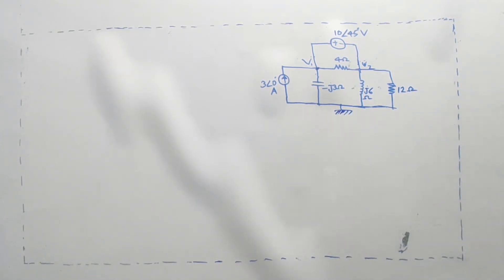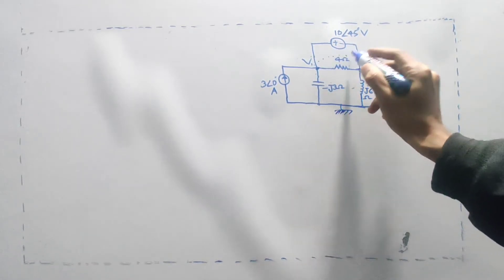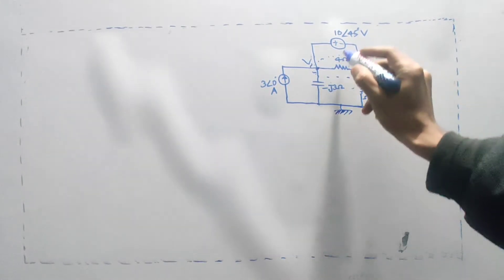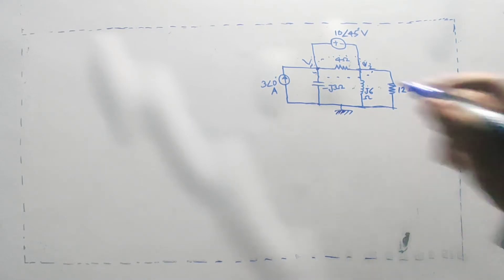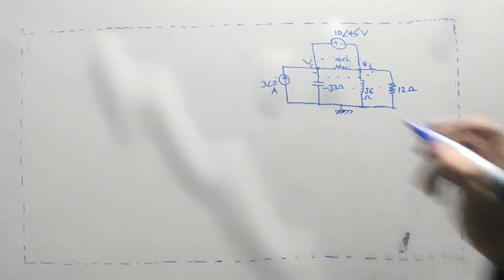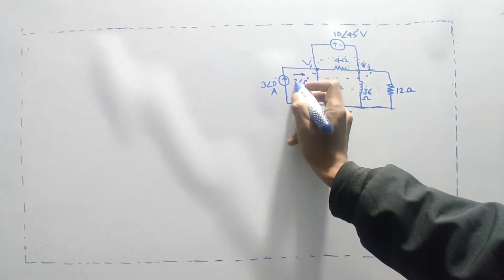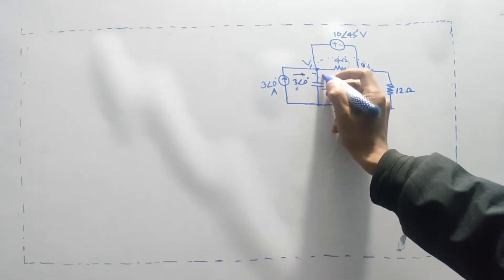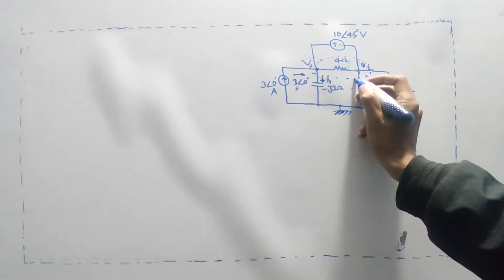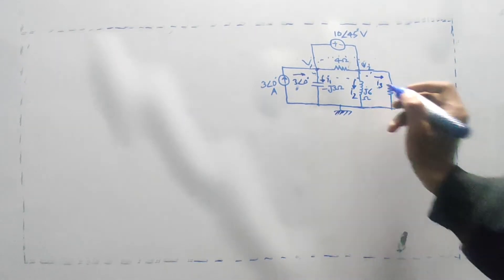What do we do in the super node analysis? When we do the super node analysis, we will say that the non-reference node is a single node. When we do the node, we will cancel out the node. How do we cancel out the node? Look at this node — we will cancel out the node.